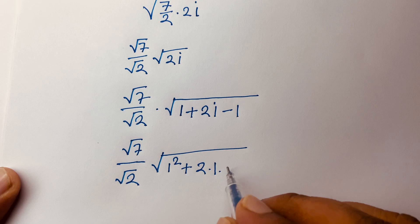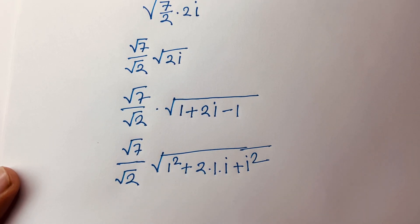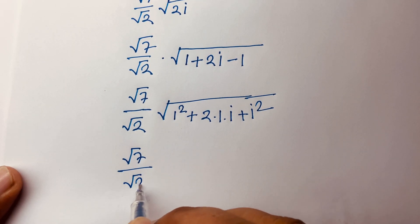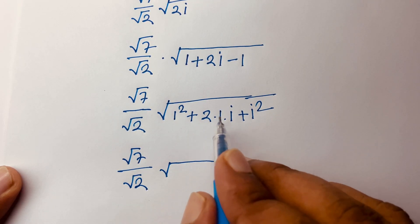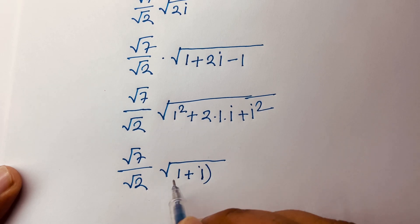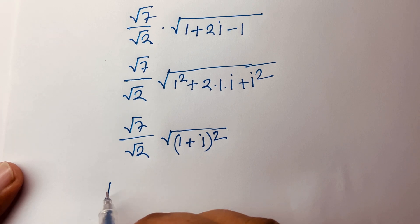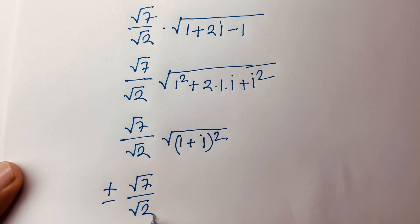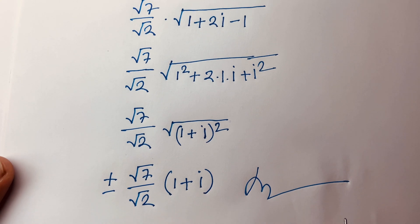That gives square root of 1 squared plus 2 times 1 times i plus i squared. Since i squared equals minus 1, this is the expansion of (1+i) squared, where a=1 and b=i. So the square root cancels, and our final answer is plus or minus square root of 7 over square root of 2, times (1+i).